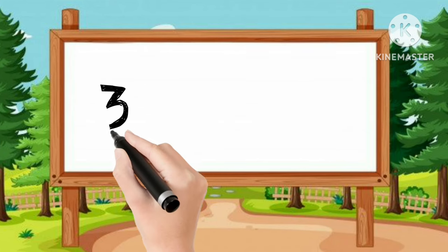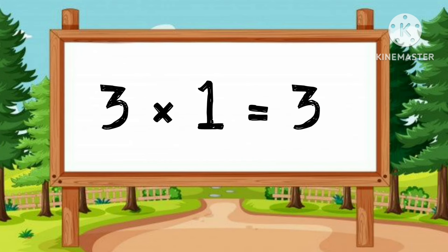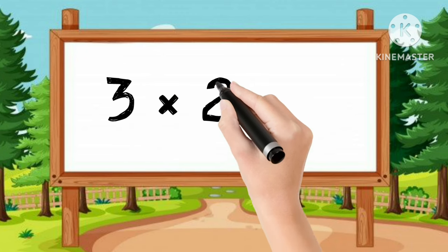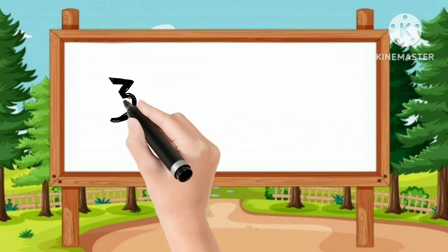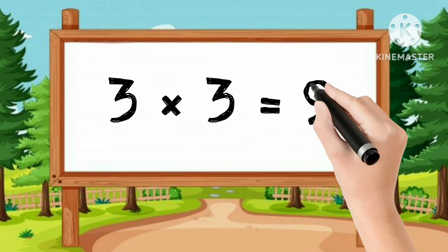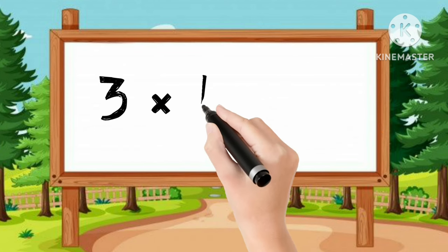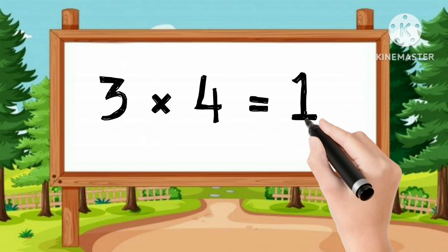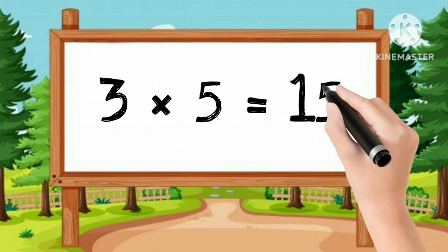Table of 3. 3-1s are 3. 3-2s are 6. 3-3s are 9. 3-4s are 12. 3-5s are 15.